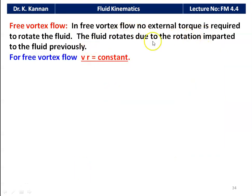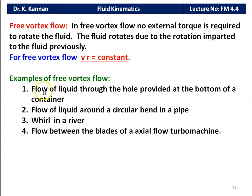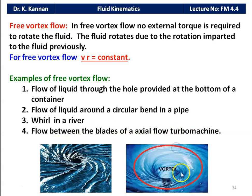In free vortex flow, no external torque is required; the fluid rotates due to rotation imparted previously. The condition is V × R = constant. Examples include flow of liquid through a hole at the bottom of a container, flow of liquid around a circular bend in a pipeline, a whirl in a river, and flow between blades of axial flow turbomachines. When fluid flows through a river and there is circulatory flow with the fluid particle rotating about its center of mass, that is free vortex flow.